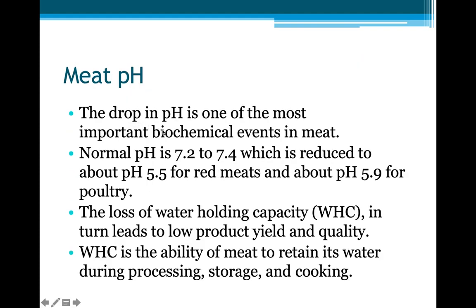The drop in pH is one of the most important biochemical events in meat. Normal pH ranges from 7.2 to 7.4, which is usually reduced to about 5.5 for red meat and up to 5.9 for poultry meat. The loss of water holding capacity leads to low productive yield and quality. Water holding capacity is the ability of meat to retain its water during processing, storage, and cooking.